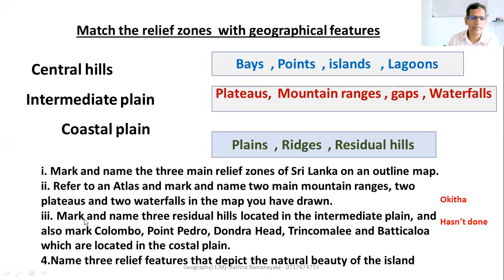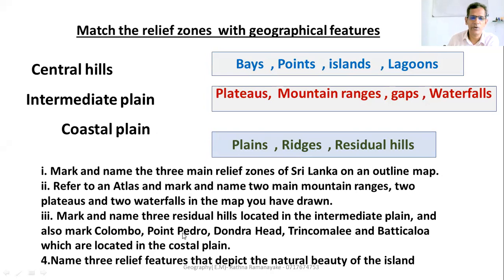Third activity: mark and name three residual hills located in the Intermediate Plain. Also mark in the same map: Colombo, Point Pedro, Dondra Head, Trincomalee, and Batticaloa, which are located in the Coastal Plain.